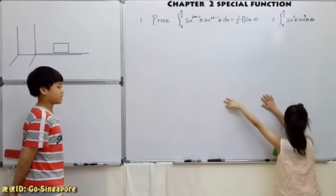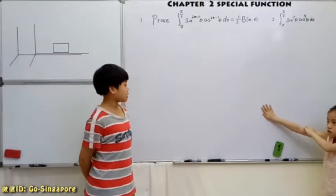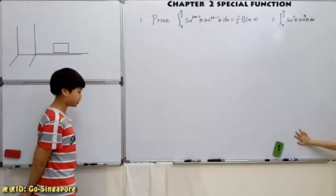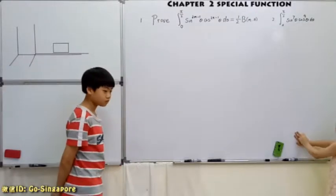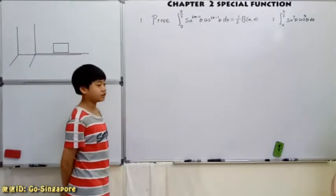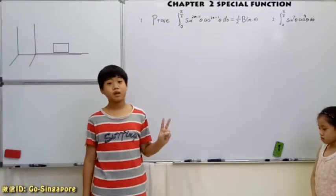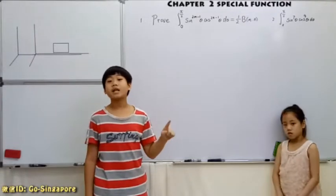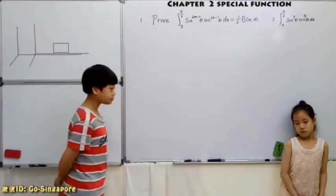In the last lesson, we have learned a new function, that is the beta function. What is the difference between the beta function and the gamma function? For beta function, we have two parameters. But for the gamma function, we only have one parameter.